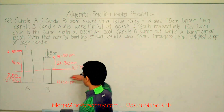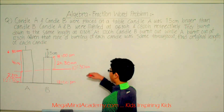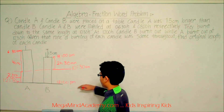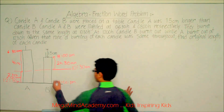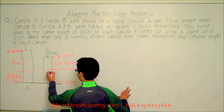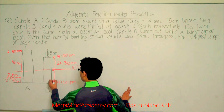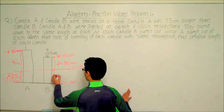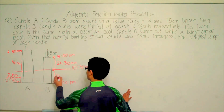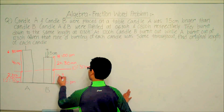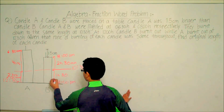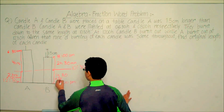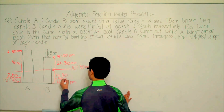It took Candle B from 10:30 a.m. to 12 p.m. to completely burn up, which is 1 hour 30 minutes, equal to 90 minutes. Candle A's remaining burn time is 2 hours, equal to 120 minutes.